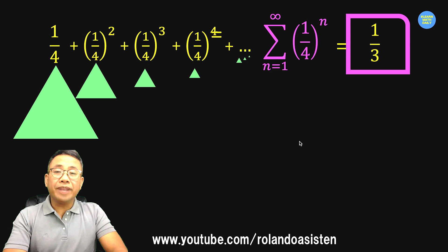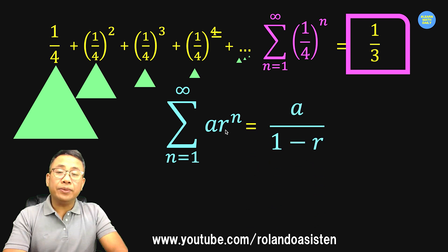Now if you are going to use a formula, we can use this formula for the sum of infinite geometric series when the value of r is between 0 and 1. In our given series, a is 1/4 because that's our first term.